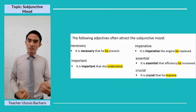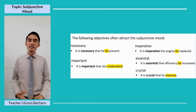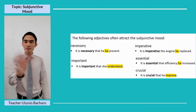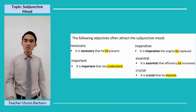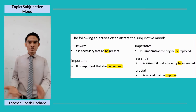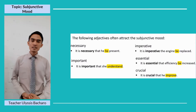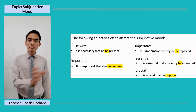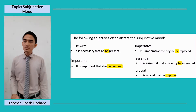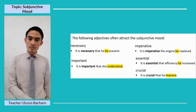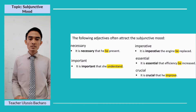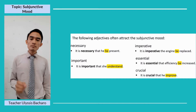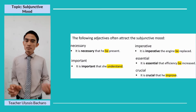Here are the adjectives that often attract the subjunctive mood: necessary and important. The rest — imperative, essential, and crucial — are just other forms of the words necessary and important. Examples: 'It is necessary that he be present.' 'It is important that she understand' — 'she understand' instead of 'understands.' 'It is imperative the engine be replaced' — 'the engine be replaced.'